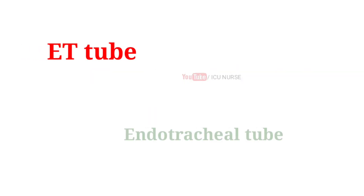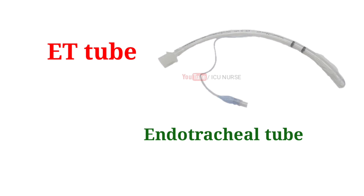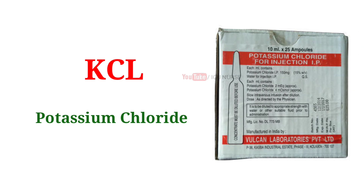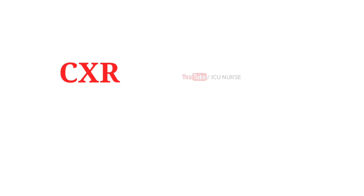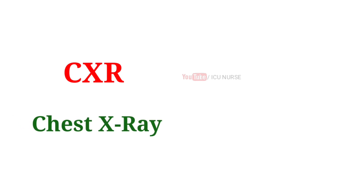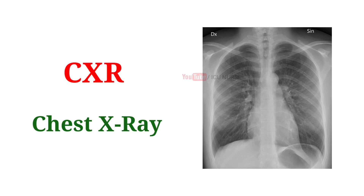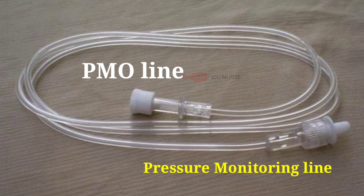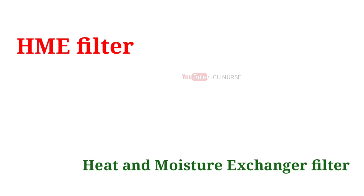ET tube: endotracheal tube. KCL: potassium chloride. CXR: chest x-ray. PMO line: pressure monitoring line. HMV filter: heat and moisture exchanger filter.